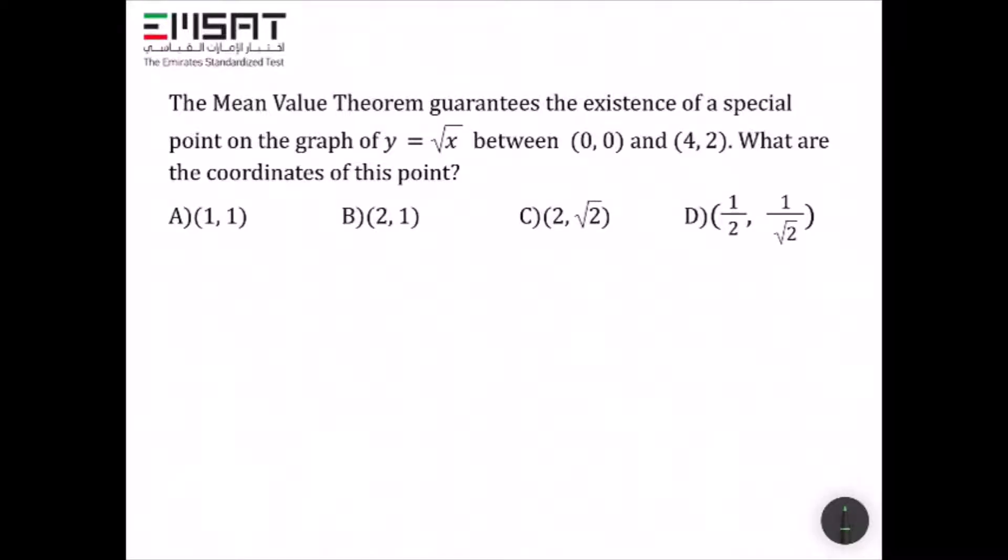The Mean Value Theorem guarantees the existence of a special point on the graph of y equals the square root of x between the points (0,0) and (4,2).